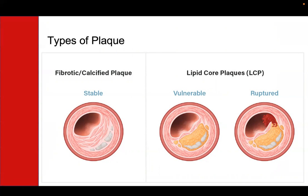But the body tries to protect us. Over time, calcium will get deposited, and a thicker fibrous cap will form over the top. This type of plaque is called calcified.